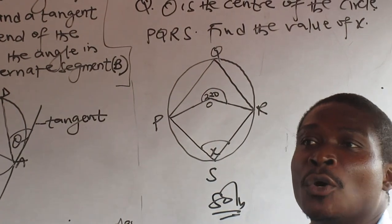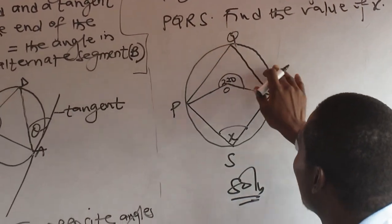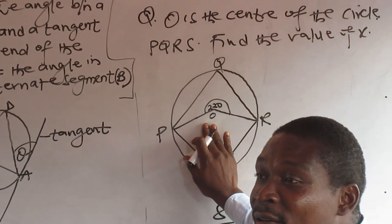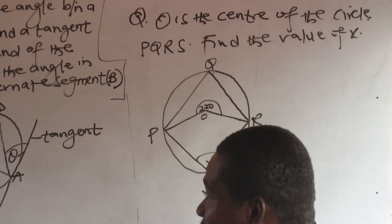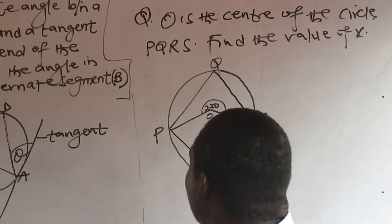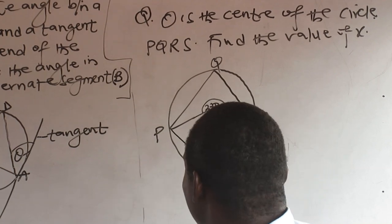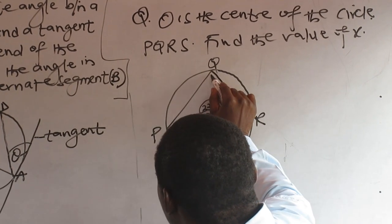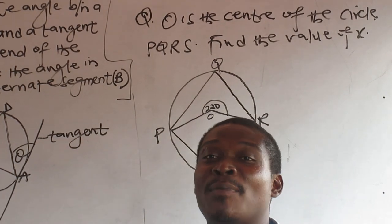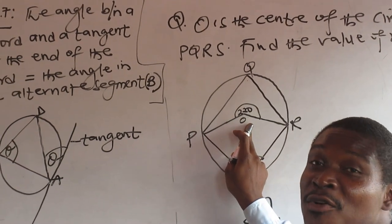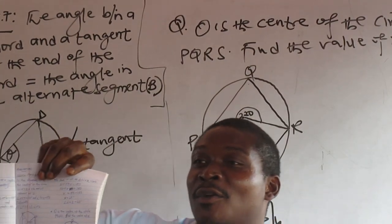Next application: O is the center of the circle EQRS. Find the value of X. What have you seen? You have seen Property three! And something else — you can start with Property two: the angle at the center equals two times the angle at the circumference.